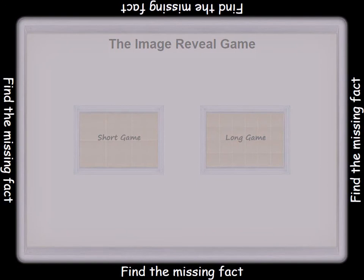One fact is missing from each fact family house. Carefully look at the facts shown and determine which fact is missing. Choose the answer at the bottom that shows the missing fact, and select the letter that matches the answer.